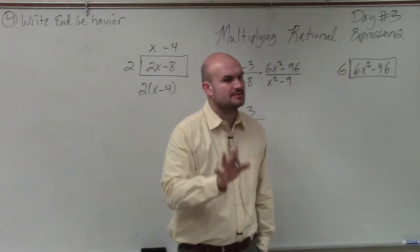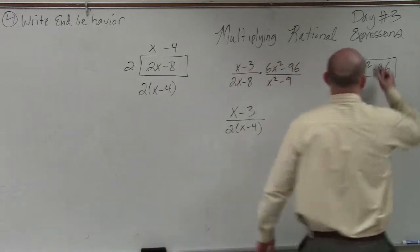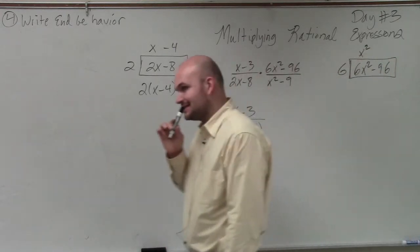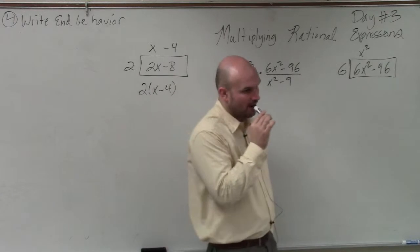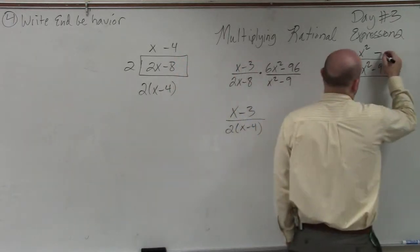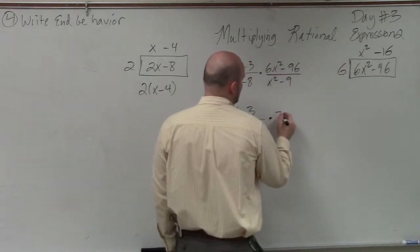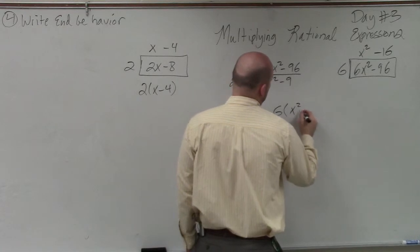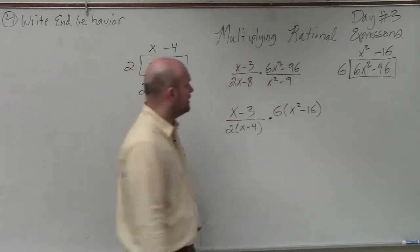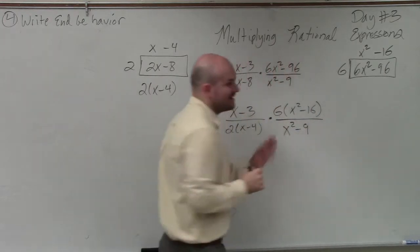So 6 times what gives you 6x squared? x squared. 6 times what gives you negative 96? Negative 16. So I can rewrite this as 6 times x squared minus 16. And over x squared minus 9. Now I'm going to get to these two in a second.